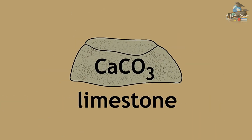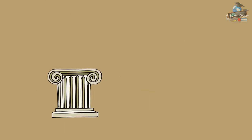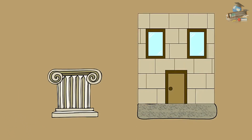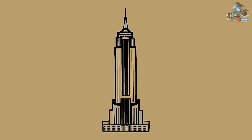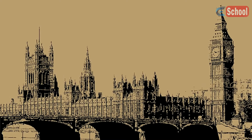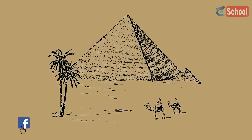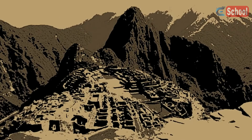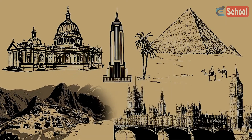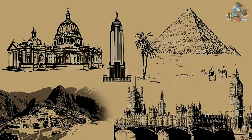Limestone can be used on its own. Many structures have been carved out of limestone and many buildings have been built with mostly limestone. Some examples include the Empire State Building in New York, USA, and St. Paul's Cathedral and the Houses of Parliament in London, England. Going further back in time, the external structure of the Great Pyramid of Giza in Egypt is made of limestone, as are the walls of Machu Picchu in Peru. This goes to show that the usage of limestone as a building material is not a recent innovation.